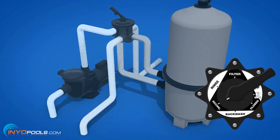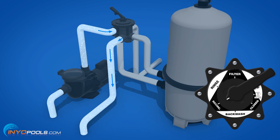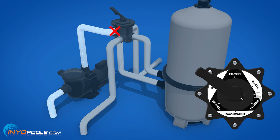Recirculate is used to bypass the filter when adding chemicals or performing maintenance — water flows from the pump, through the valve, and back to the pool. And finally, the closed setting completely blocks the flow of water through the valve.